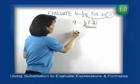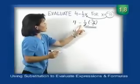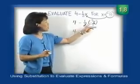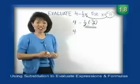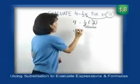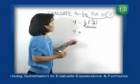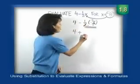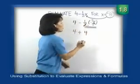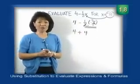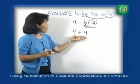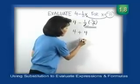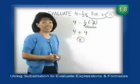2 divides into 2 once, and 2 divides into 8 four times. We have the 4 out front, and let's check the sign — we count the number of negative signs: 1, 2. Two is an even number, so we get a positive product. In the numerator we have 1 times 4, which is 4, and the denominator is 1 times 1, or 1. That brings us to 4 plus 4, which is 8.